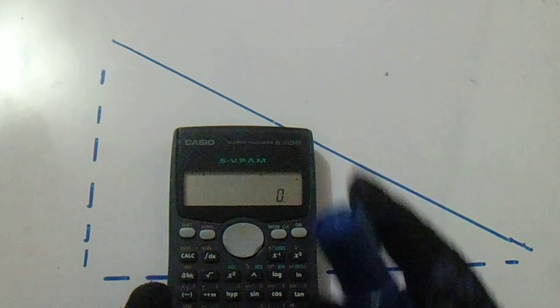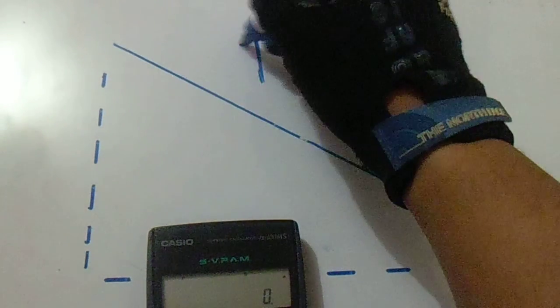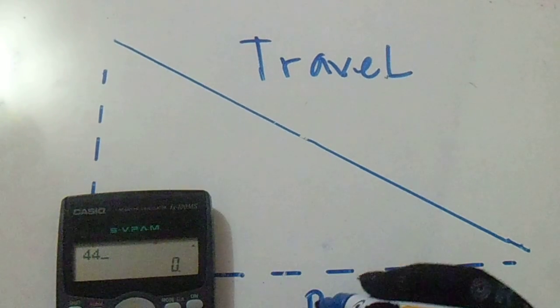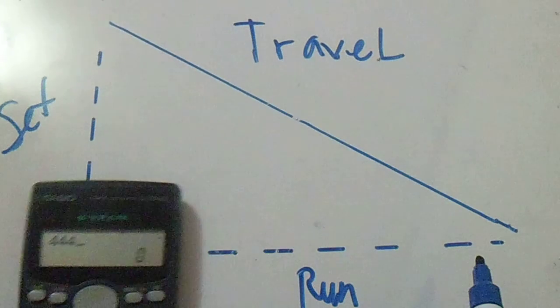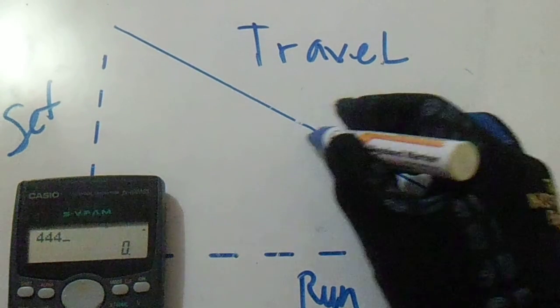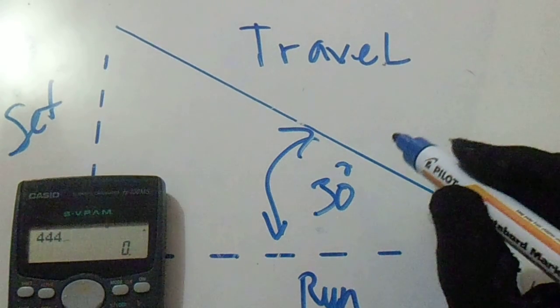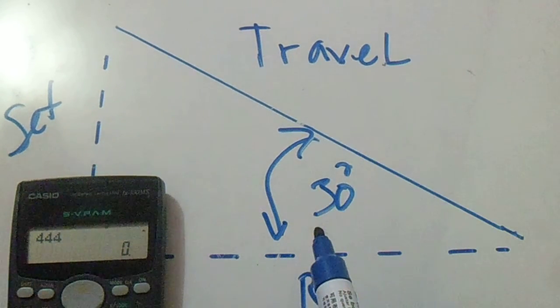We have a travel, we have a run, and this is our set. Let's say we have an angle of 30 degrees, and we have a given size which is...